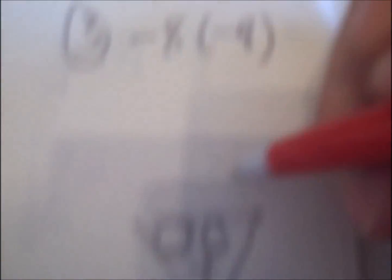Negative times a negative. Two negatives. I circle two negatives. My answer should be positive. 8 times 9 is 72.